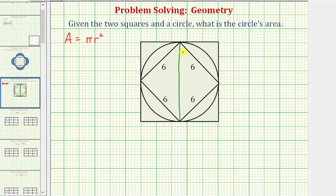Notice how when we form the diagonal of the square, it cuts the square into two right triangles — one on the left and one on the right. All four sides of the square are congruent, and therefore both of these are isosceles right triangles, which means the two acute angles measure 45 degrees each in both right triangles.